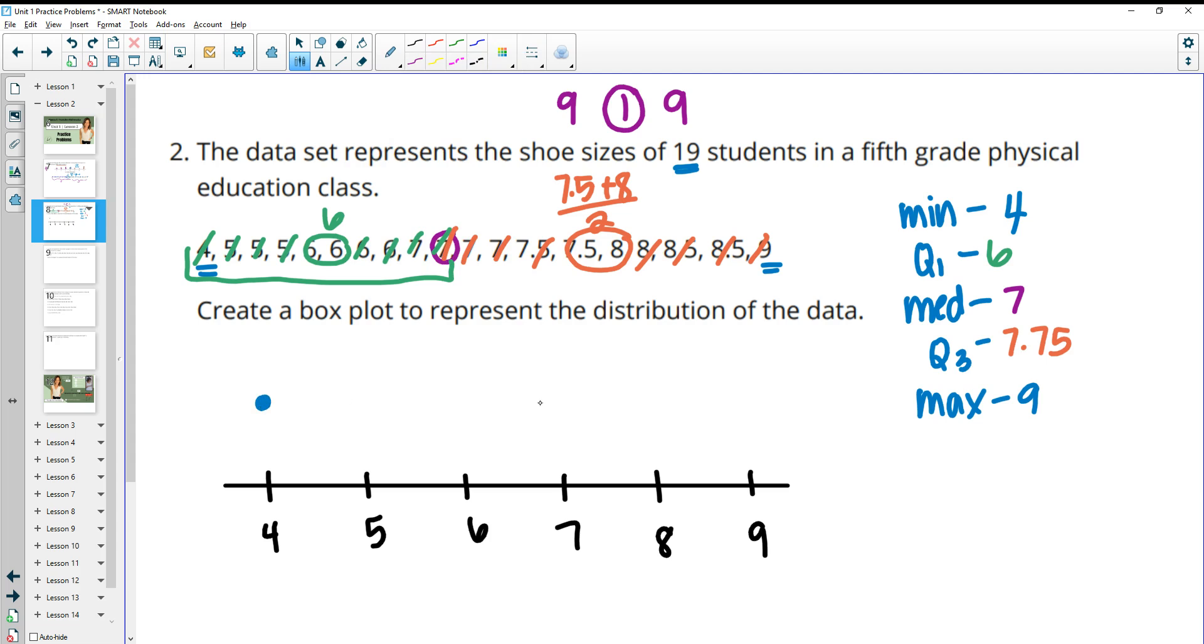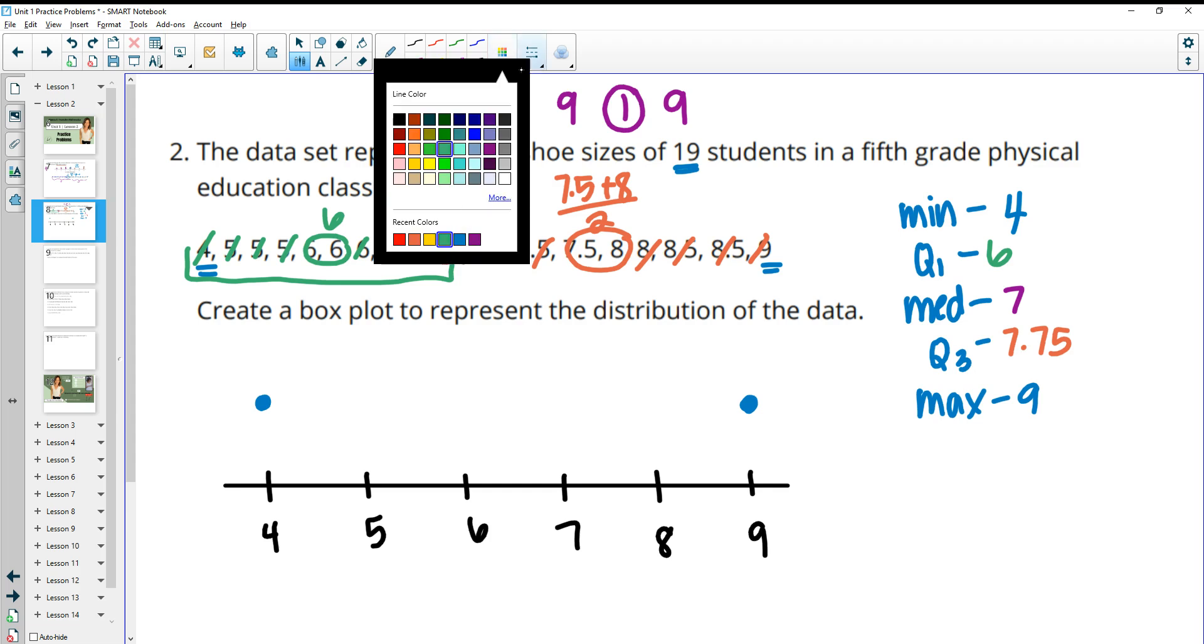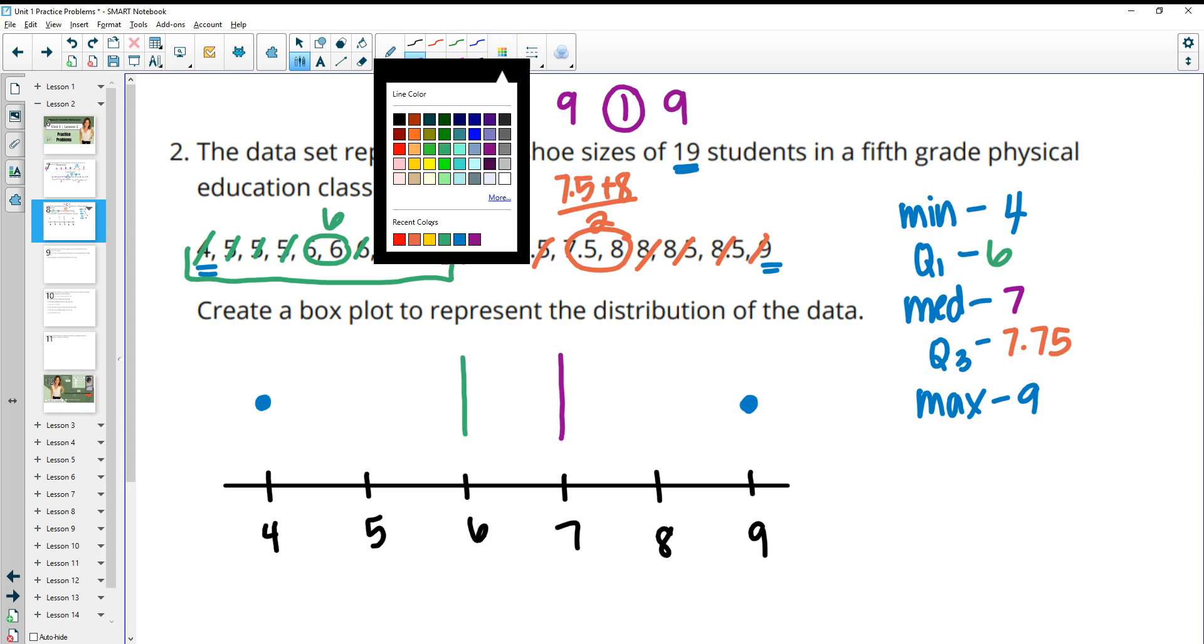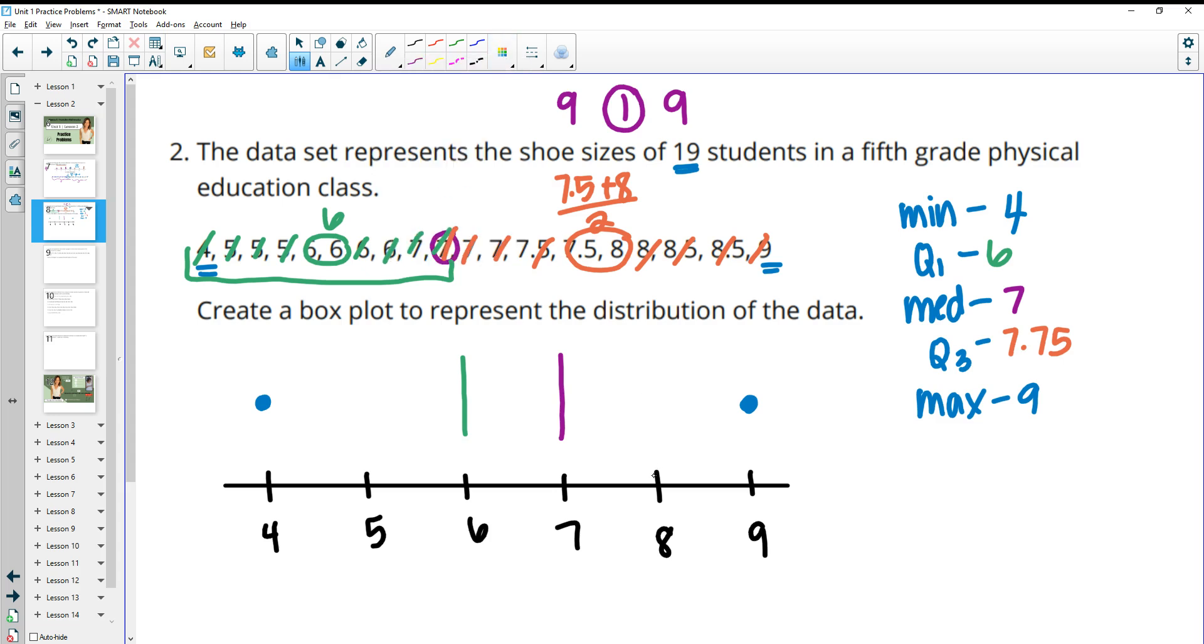So then you put a minimum dot and a maximum dot, so we'll just go above here. So 4 is the minimum, 9 is the maximum. Then at each quartile you want to draw a vertical line. So at quartile 1 we'll draw a vertical line, at the median we'll draw a vertical line, and then at the quartile 3 we'll draw a vertical line. So that's 7.75, so just a little bit before 8. And then this makes our box in the middle.